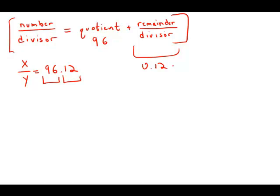So here, that 0.12 equals the remainder, 9, over the divisor, y.